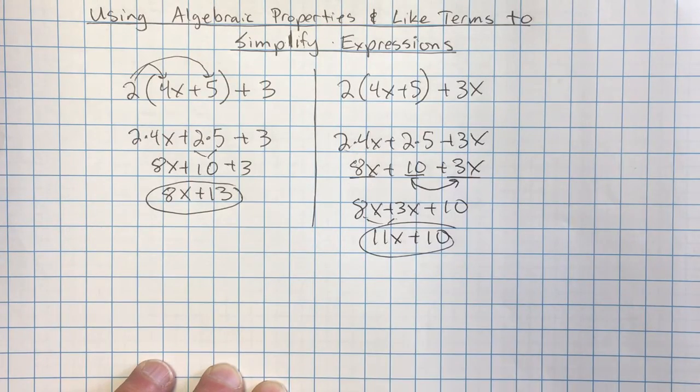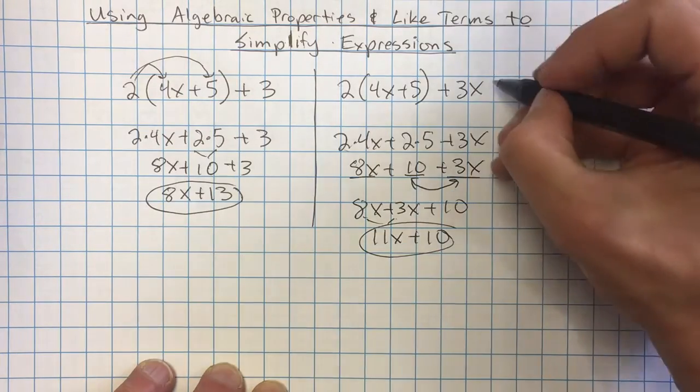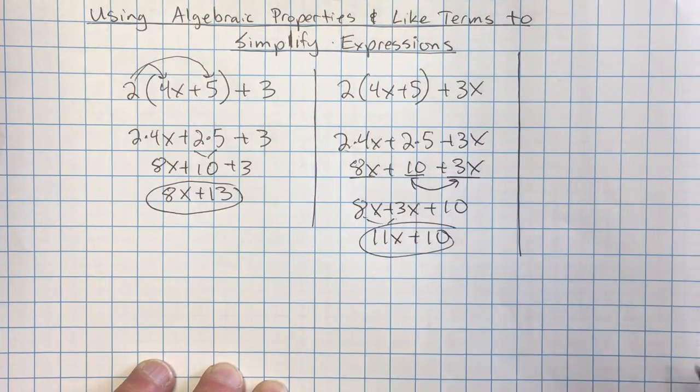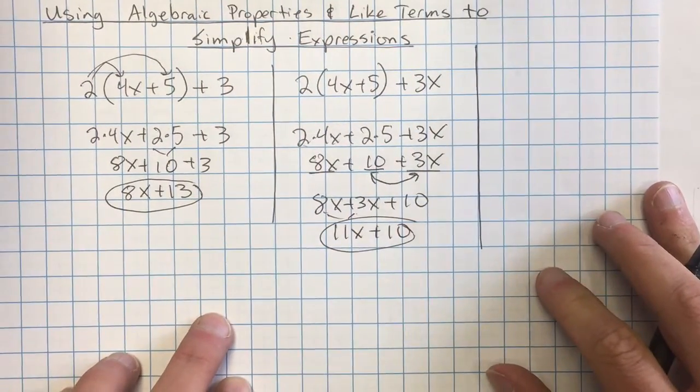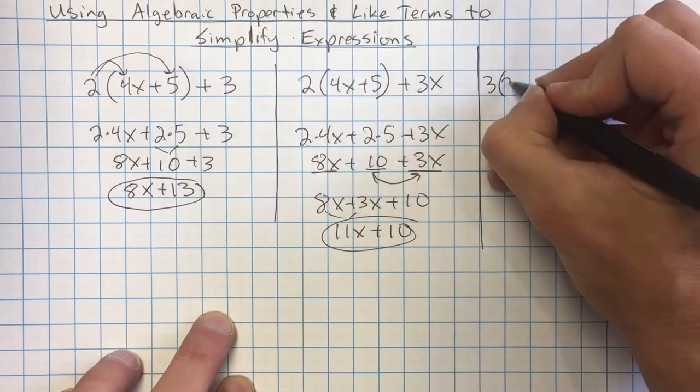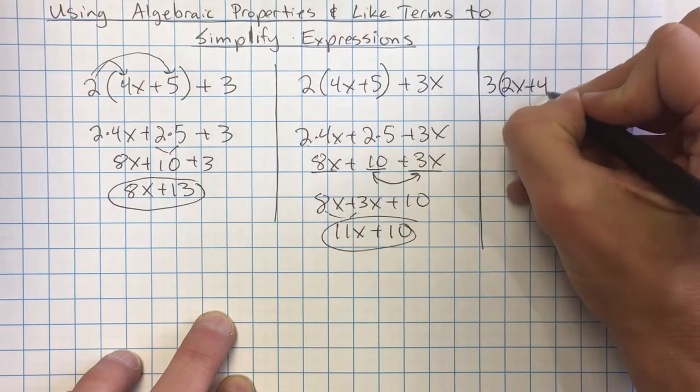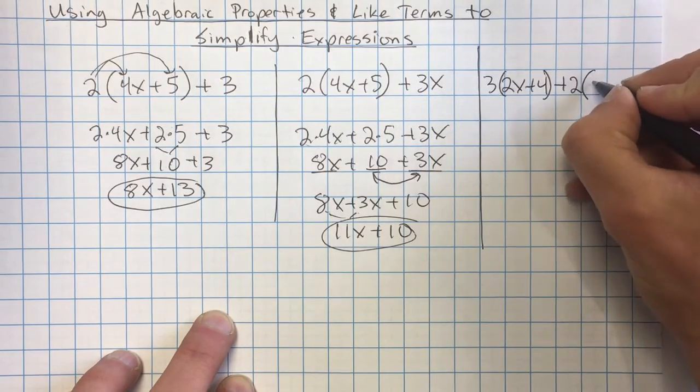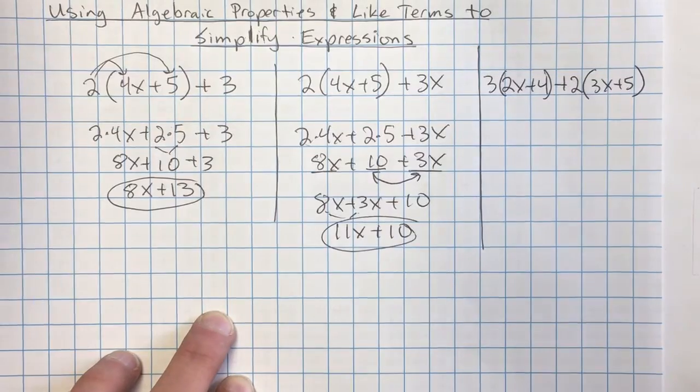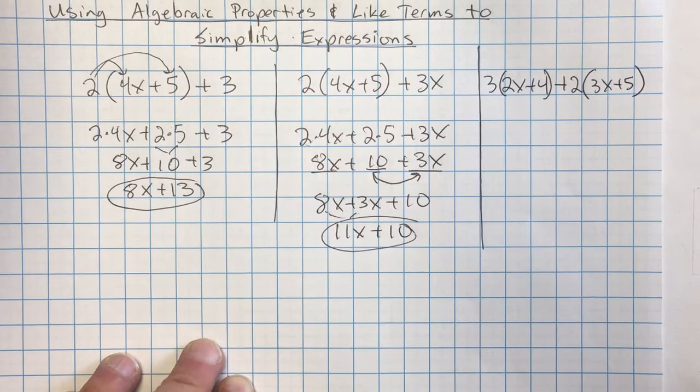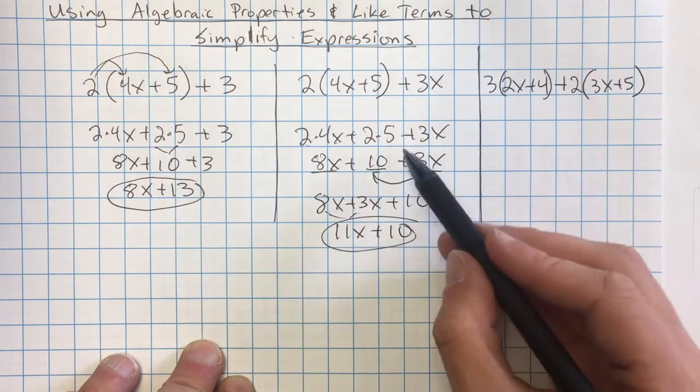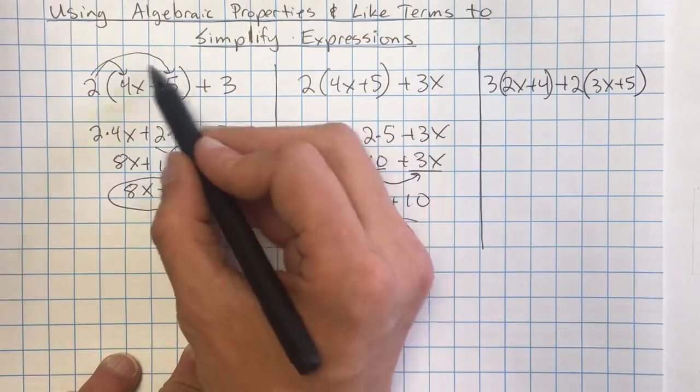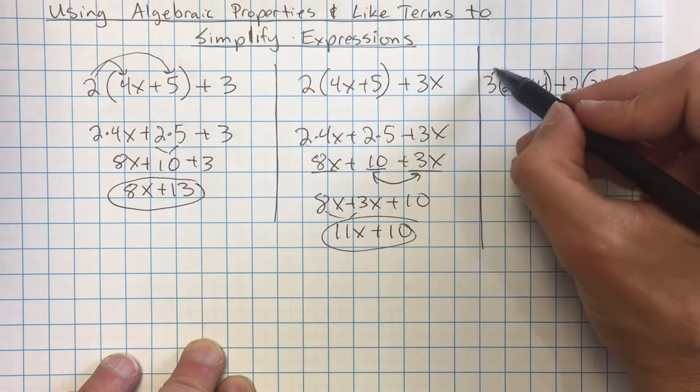Now we can also use this. You might see bigger things. For example, if we had something like 3 times 2x plus 4 plus 2 times 3x plus 5, we can see we have a lot of numbers and a lot of things going on there. I'm going to follow the same process I used before. I see two things that look a lot like this distributive property right here. So I'm going to just apply the distributive property.